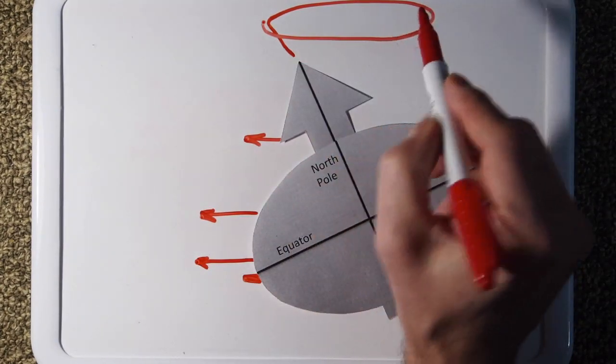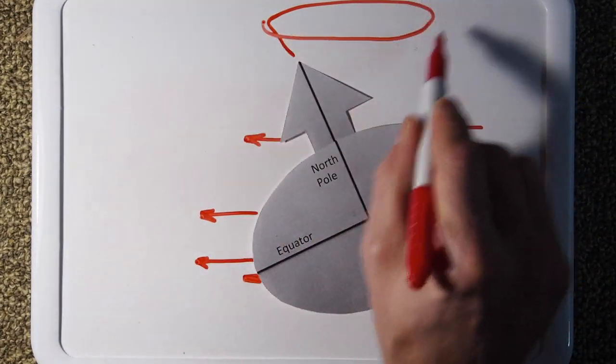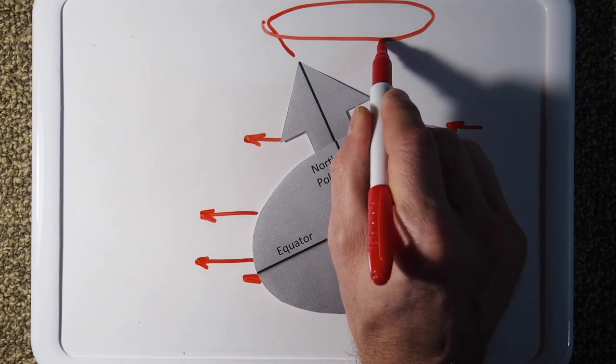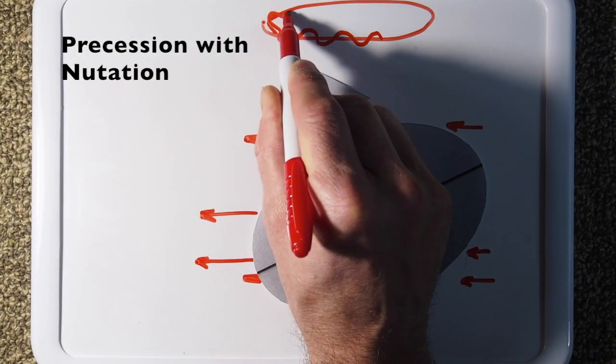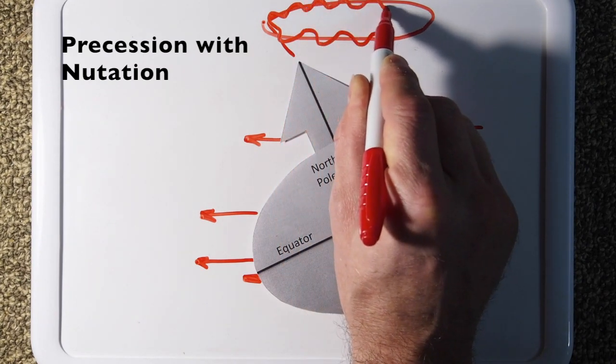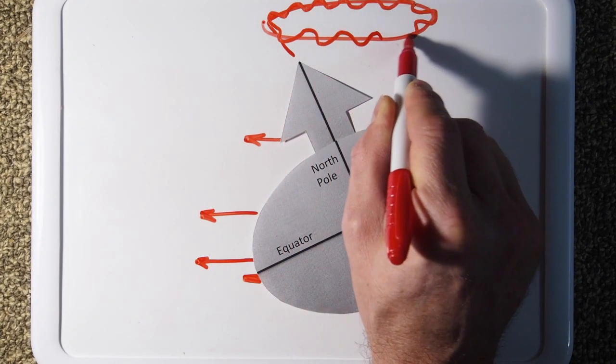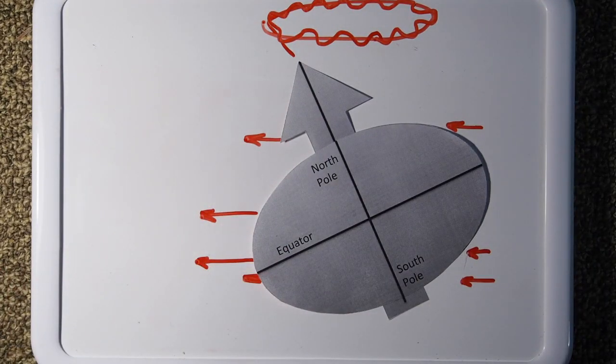Now, it turns out this motion is not perfectly smooth. There's also kind of a wobble associated with it. The main wobble, the main one, is about every 18 and a half years. So what is that? What causes that?